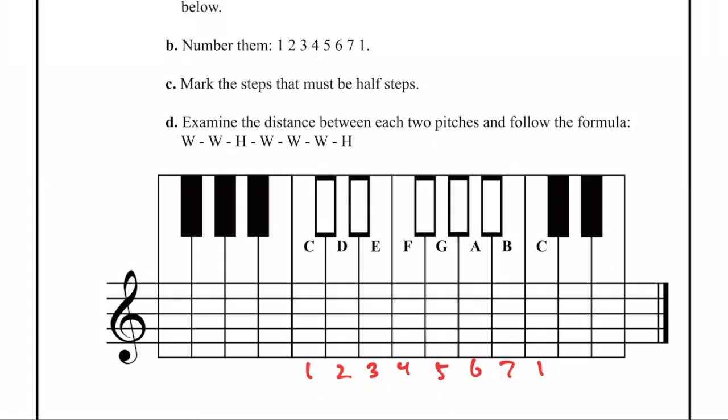Rule number two, write out the notes: C, D, E, F, G, A, B, and C. Since we are learning the C-flat major scale, we're going to draw the flat in front of C and at the top here.